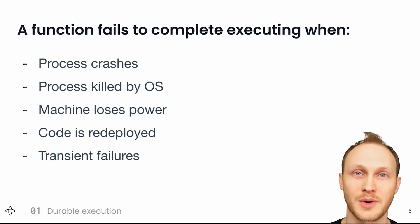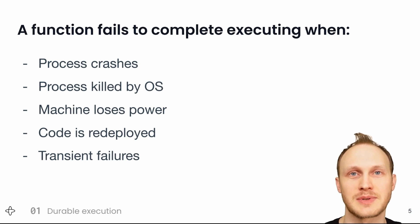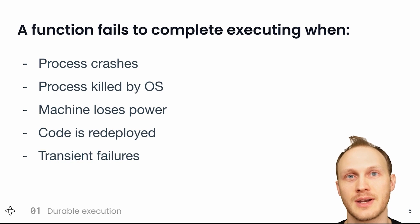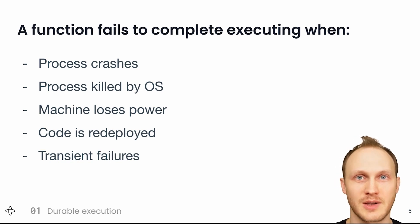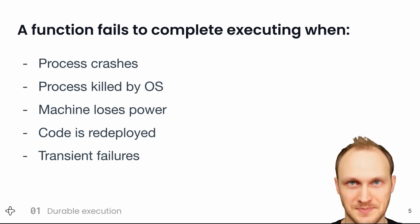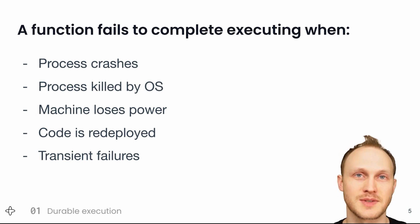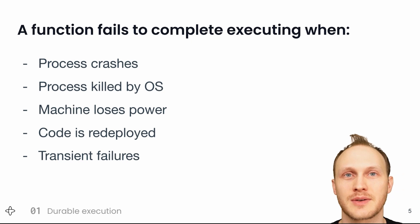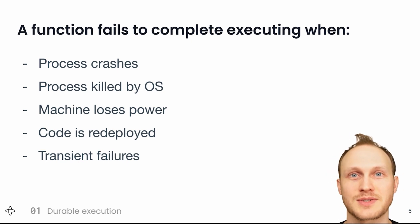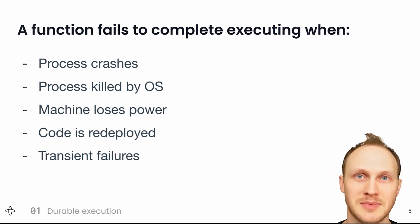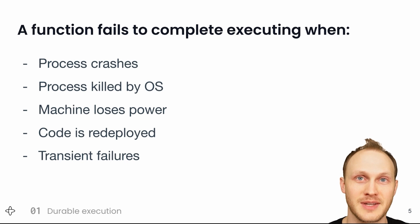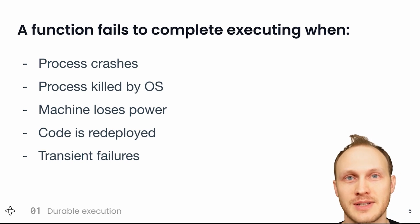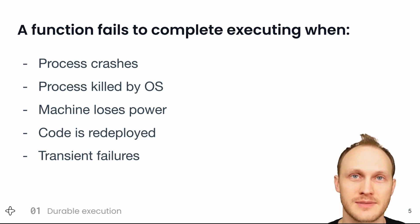That's why people do choreography, using a message bus to coordinate between services, or orchestration, where there's a central coordinator deciding which services to call. Choreography gets really complex to reason about and debug when things go wrong. In the Microservices Patterns book, Chris Richardson recommends using orchestration for all but the simplest of use cases. And you can think of durable execution as like a developer-friendly version of orchestration.